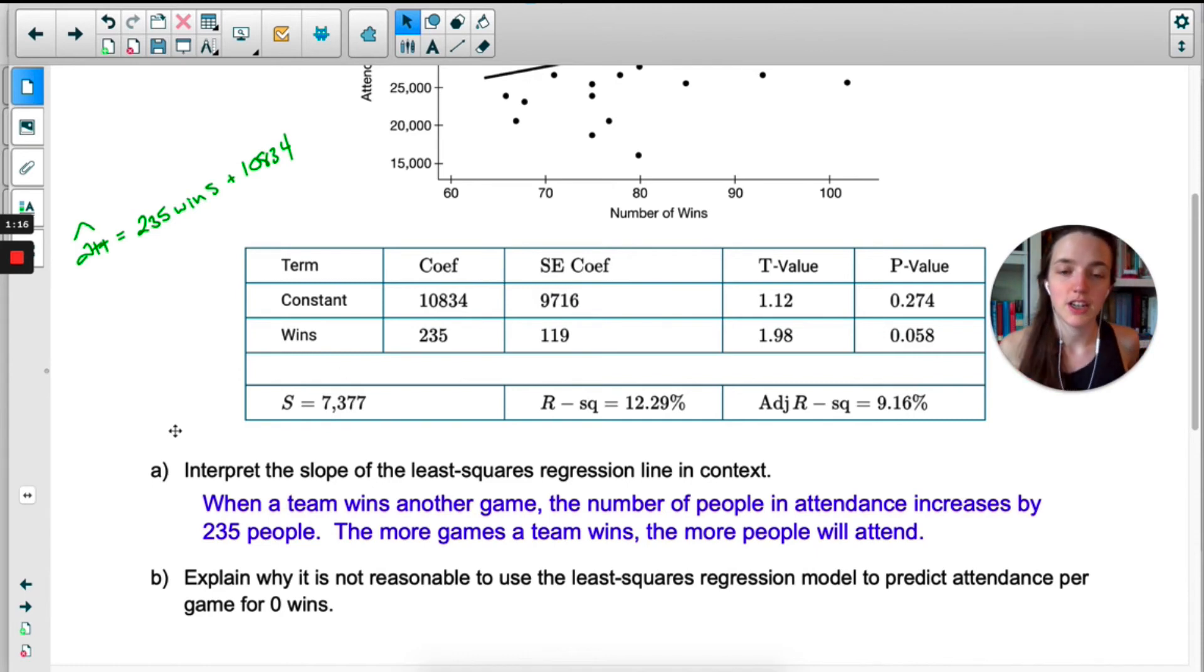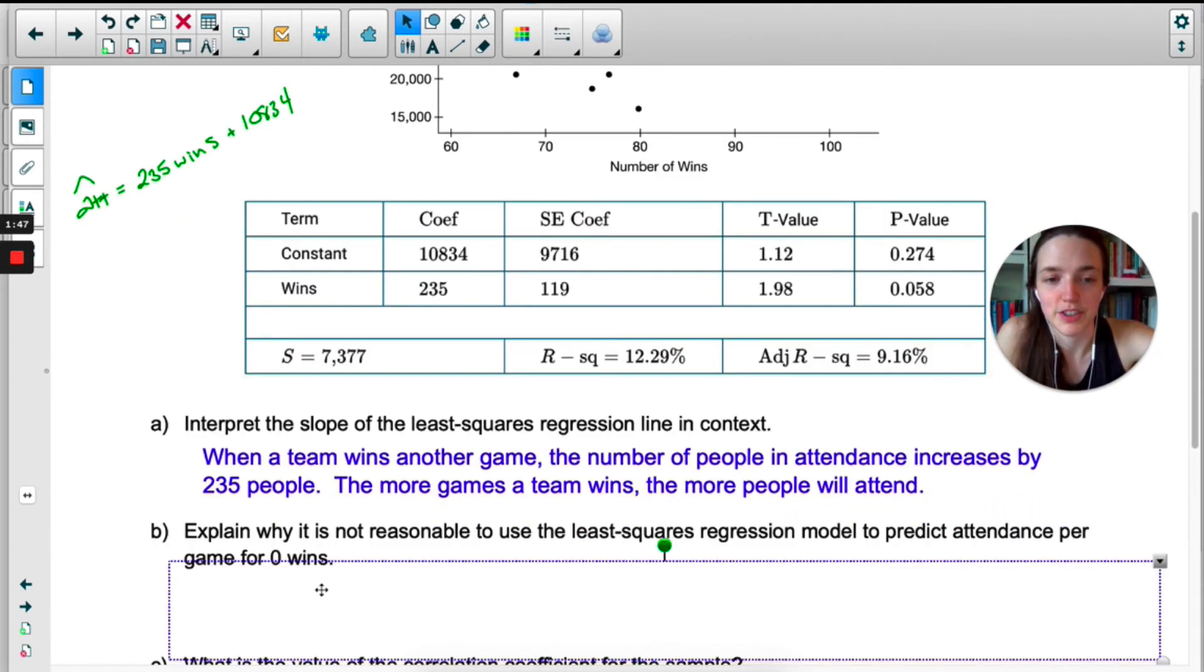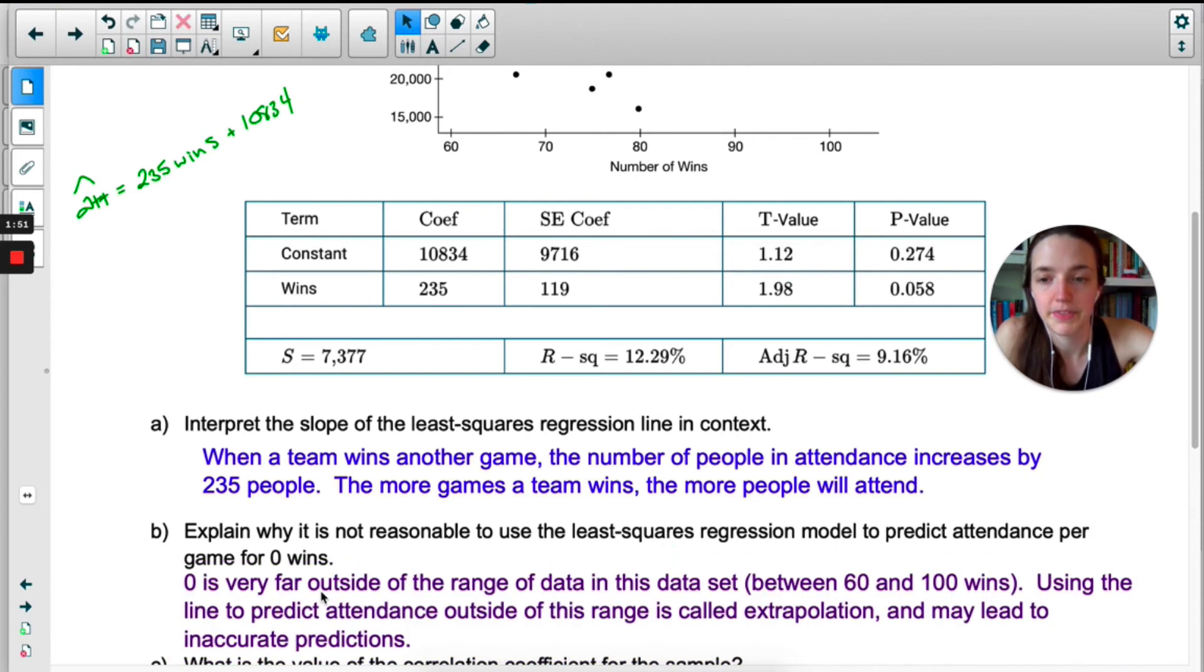In other words, the more games that a team wins, the more people will attend. Now just a heads up, this second sentence, if that's all you wrote, that would not be specific enough. It's okay as a follow-up sentence, but it can't be the only thing you write. The actual slope should be somewhere in your answer. Explain why it's not reasonable to use this model to predict game attendance for zero wins. All right, zero is really far outside of the range of the data points we have. The number of wins we were examining went between 60 and 100. Zero is way out of that range. This was called extrapolation. When you use the least squares regression line to predict values that are way outside of what you studied. Extrapolation often leads to inaccurate predictions. So using a line to predict attendance outside of this range may lead to inaccurate predictions.